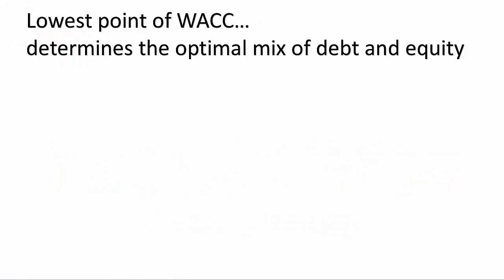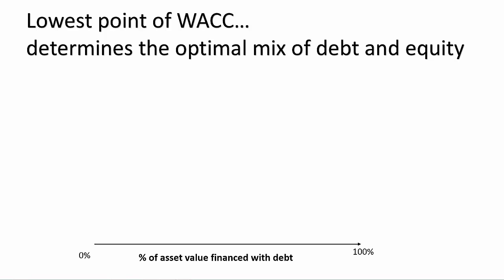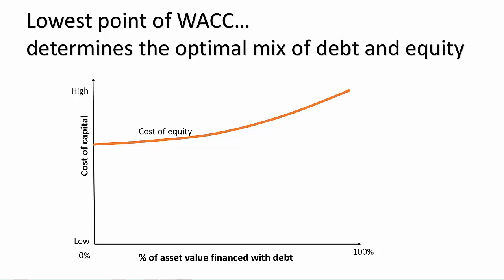Financial leverage is the degree to which your operations are financed with debt. Let's plot this along the x-axis: at 0% you're entirely financed with equity, at 100% you're entirely financed with debt. On the y-axis, let's put the cost of capital — the rates of return we just discussed for debt and equity instruments. The cost of equity is generally an upward sloping curve because as the degree of financial leverage increases, the risk of default on debt increases, and equity investors will demand a higher rate of return.